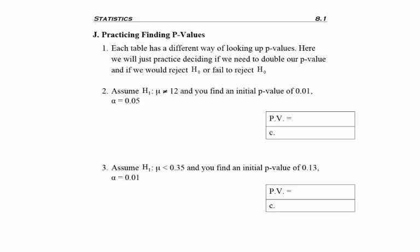And now we'll practice finding our p-values. Well, really, every table has a different way of finding p-values. So we'll learn those when we get to those problems. Right now, we're just going to decide, do we double our p-value? And based on our p-value, do we reject or fail to reject H-naught?